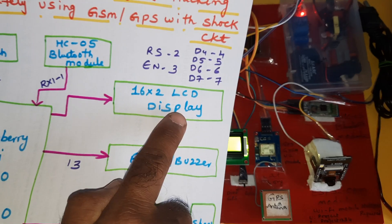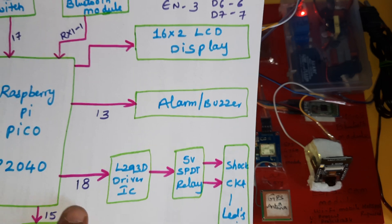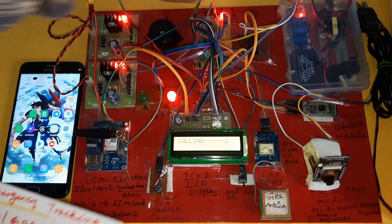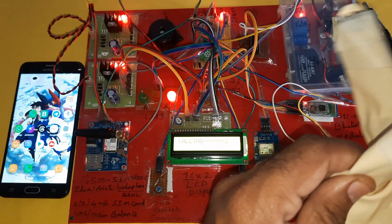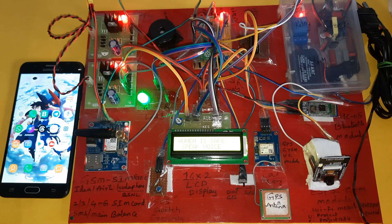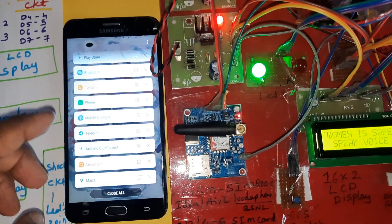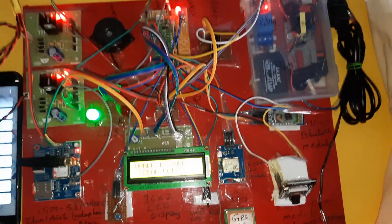The connection pins are RS, enable, D4, D5, D6, D7 on pins 4, 5, 6, 7, 2, 3, 4, 5. Alarm and L293D driver IC board, SPDT relay, relay coil, and shock circuit. I think everything is completed - thank you. In summary, we have Wi-Fi hotspot, Bluetooth module, Bluetooth app, GPS, SMS alert, and call alert. Thank you.